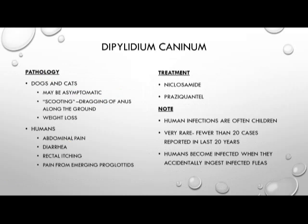Dipylidium caninum infection in dogs and cats may be asymptomatic, while scooting or dragging of the anus along the ground can often be seen, which is a classic sign of infection. Those animals, if infected, can also suffer from weight loss. Humans, if infected, can suffer abdominal pain, diarrhea, rectal itching, and pain from emerging proglottids. Of note, human infections are often found in children playing closely with infected animals, although infection in humans is very rare.